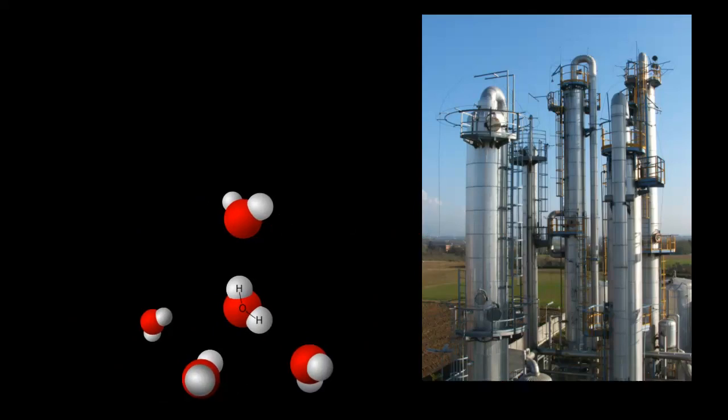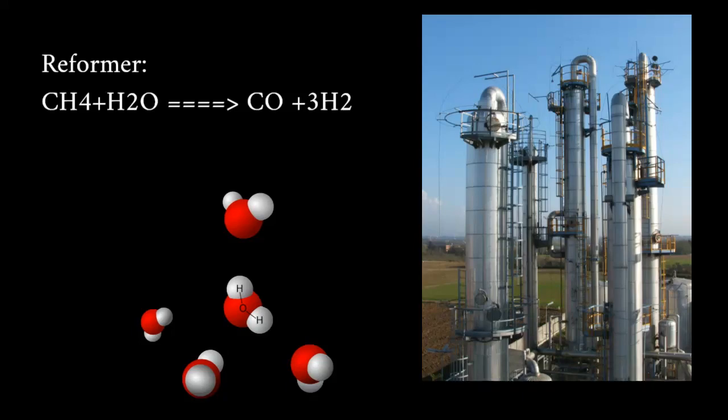To remove sulfur that can retard hydrogen production from natural gas, hydro desulfurization and adsorption techniques with activated carbon are used. The purified natural gas product is mixed with steam and passed over an extremely high temperature reactor where hydrogen and carbon monoxide are produced.